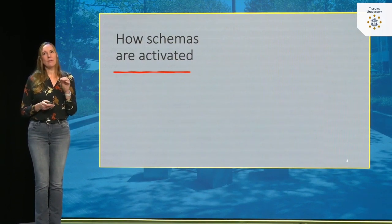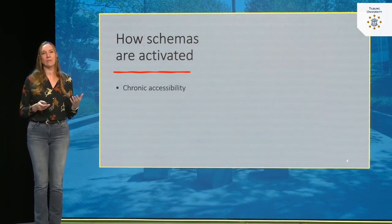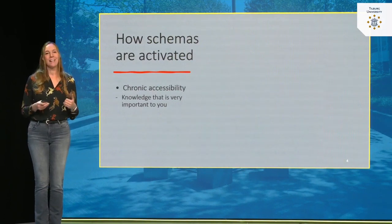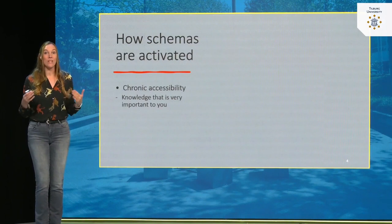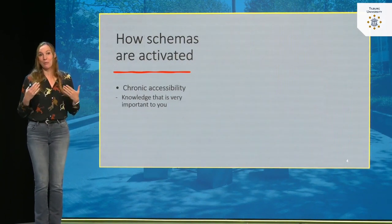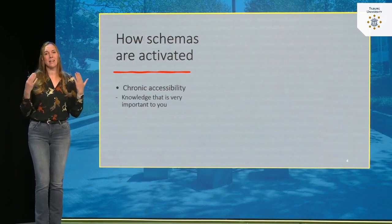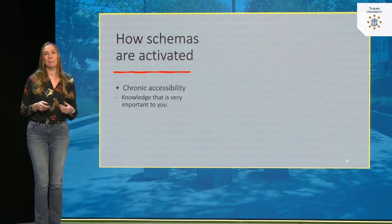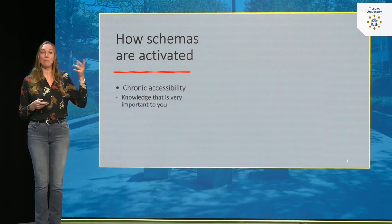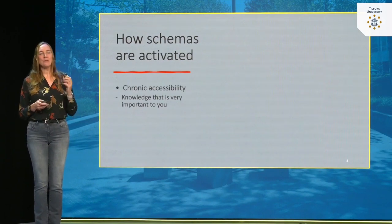When trying to understand when schemas get activated, it's important to realize that some schemas are always accessible — this is called chronic accessibility. For example, knowledge that is very important to you, like knowledge about yourself. In lecture five we'll talk extensively about the self, and we'll see that all the knowledge we have about ourselves is basically always activated. The same goes for information about your family or your closest friends.